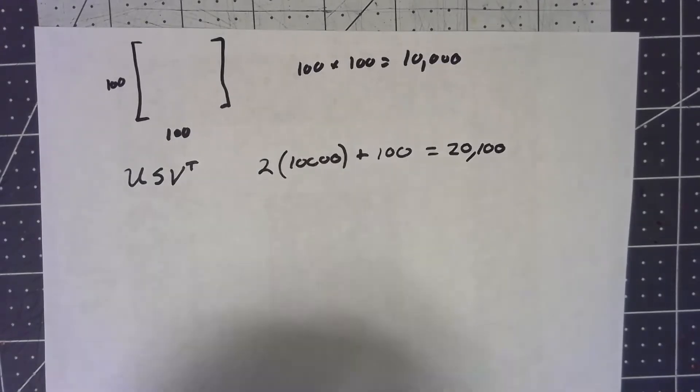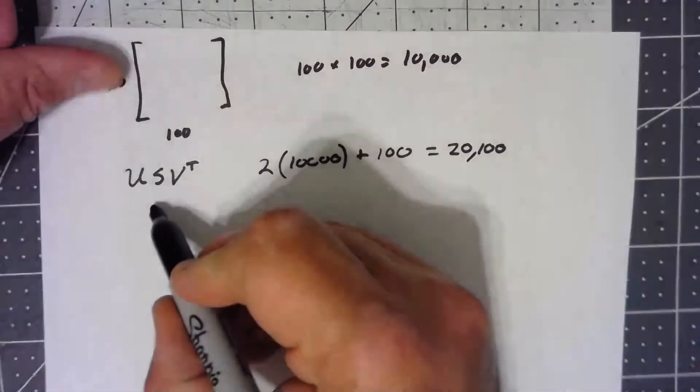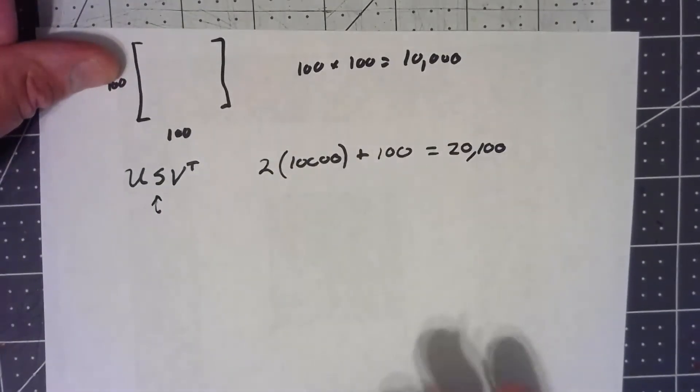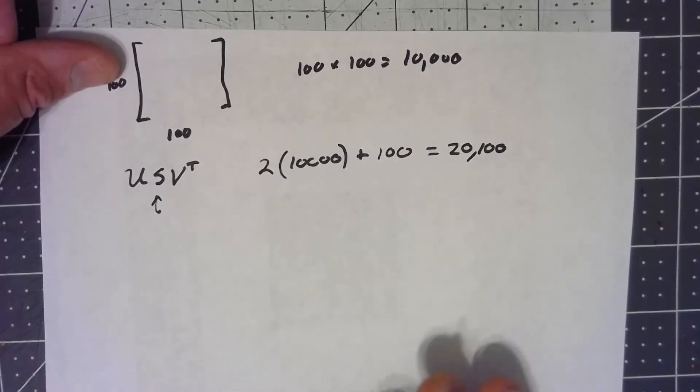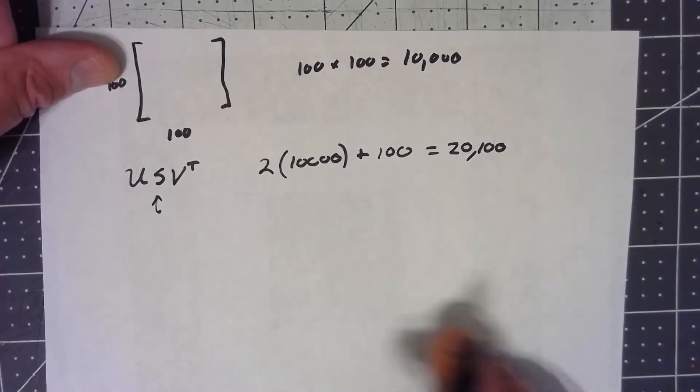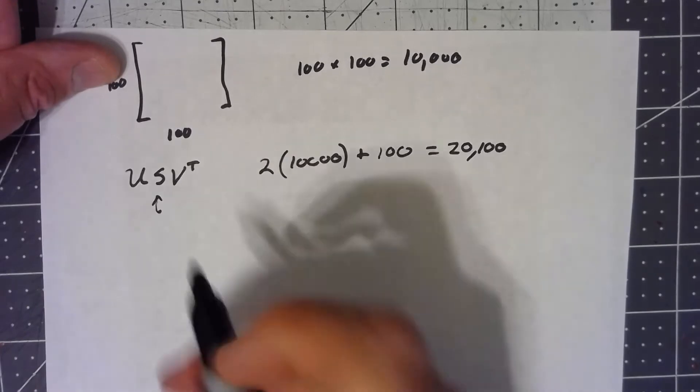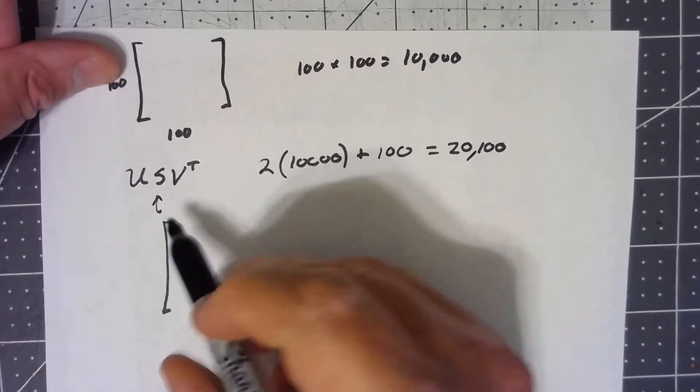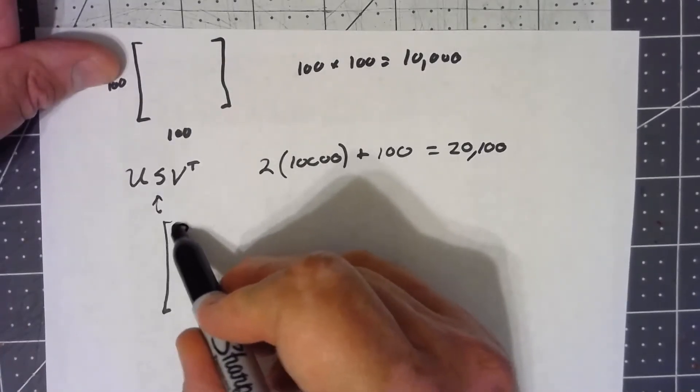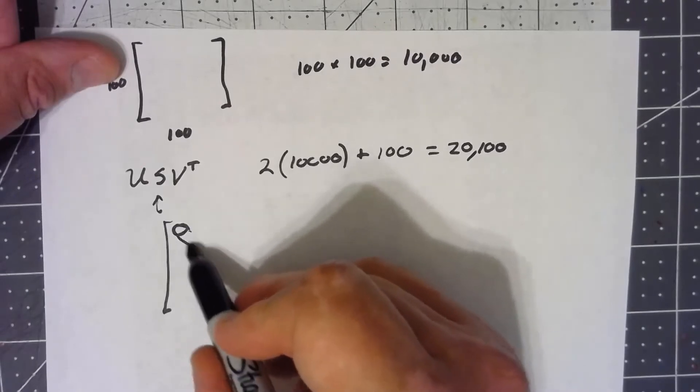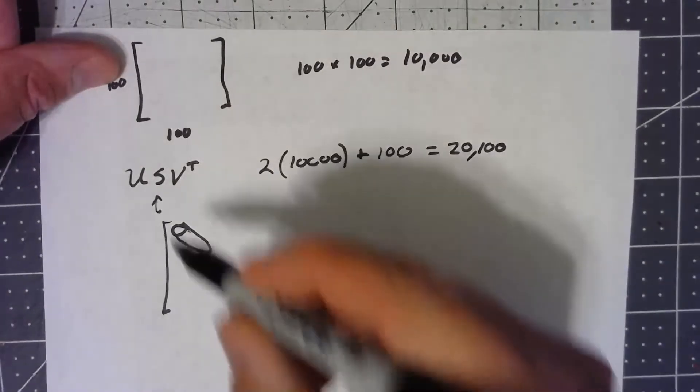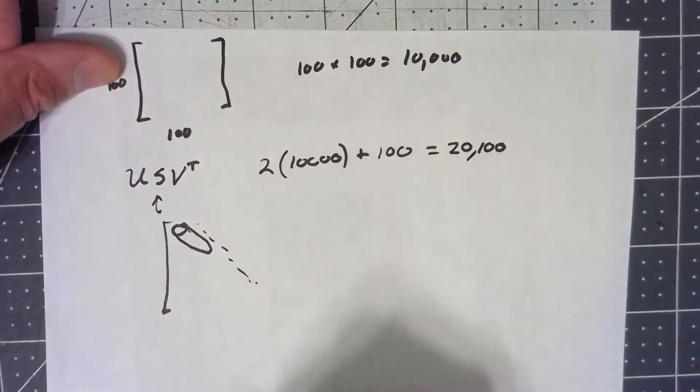But the important thing is this S. Remember that when we've been setting up these singular value decompositions, we've been arranging the S so that the largest singular values are up in the top left and they get smaller as we go down the diagonal.